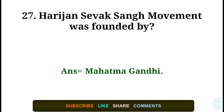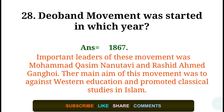Question number twenty-seven: Harijan Sevak Sangh movement was founded by? Answer: Mahatma Gandhi. Question number twenty-eight: The Deoband movement was started in which year? Answer: In the year 1867. Important leaders of this movement were Mohammad Qasim Nanautavi and Rashid Ahmed Gangohi. Their main aim was to oppose Western education and promote classical studies in Islam.